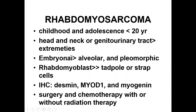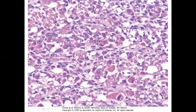Embryonal rhabdomyosarcoma is often seen in children, in the head and neck region or genitourinary tract. The other varieties are seen in the extremities. There are rhabdomyoblast-like cells — tadpole-like or strap cells. On immunohistochemistry, these tumors are positive for desmin, MyoD1, and myogenin. Treatment is surgery and chemotherapy with or without radiation therapy.